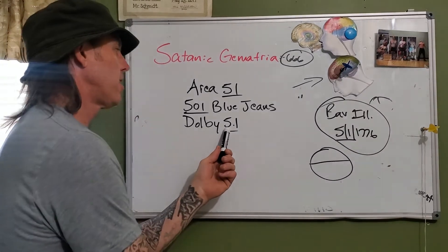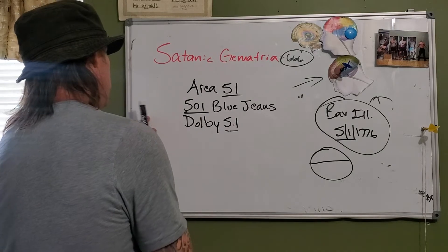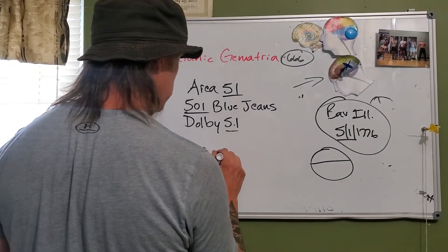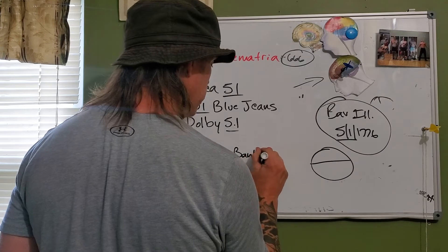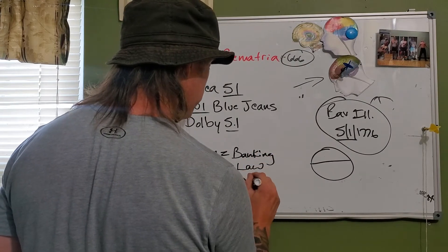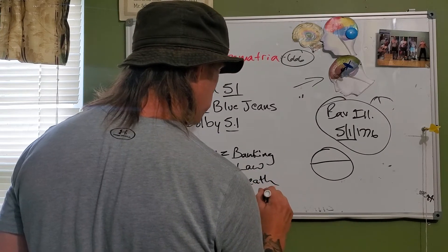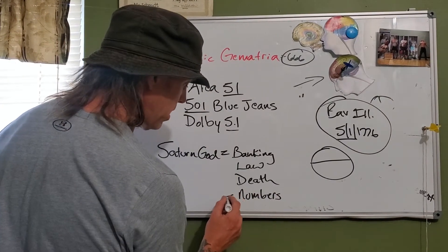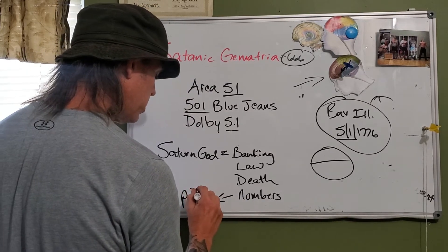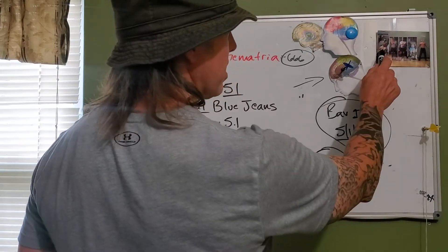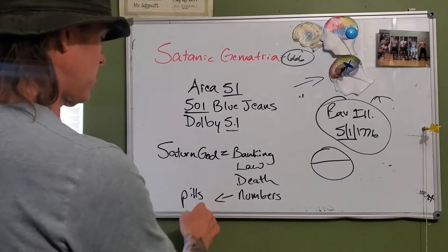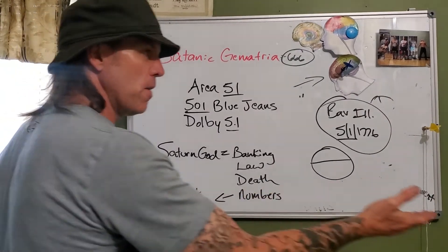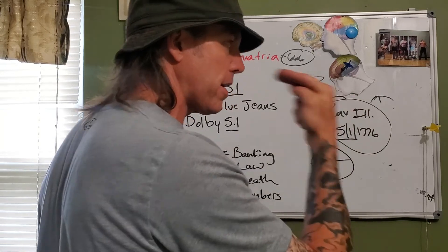This is them rubbing it in our face. Saturn is the god of banking, law, debt, and numbers — and everything else: the cube, government. These numbers are what's on all the pills. You're crazy to think you're going to take a pill and just get better. It's a slave thing — you go in every night, eat more of them, program yourself more to make it concrete in your brain.